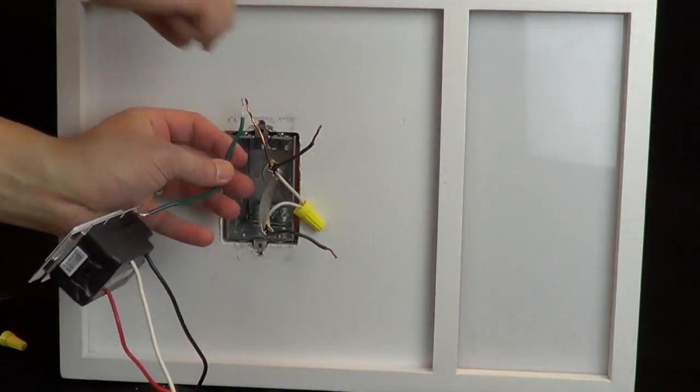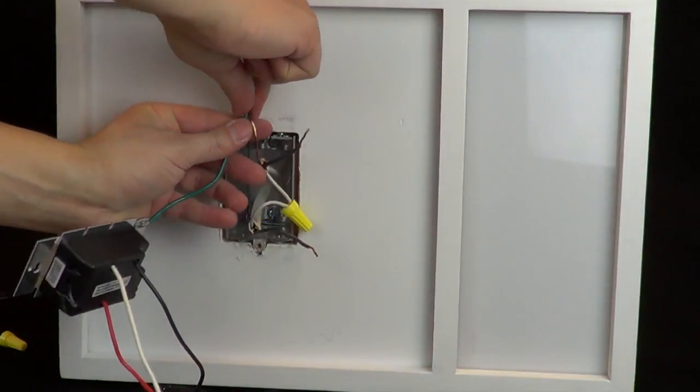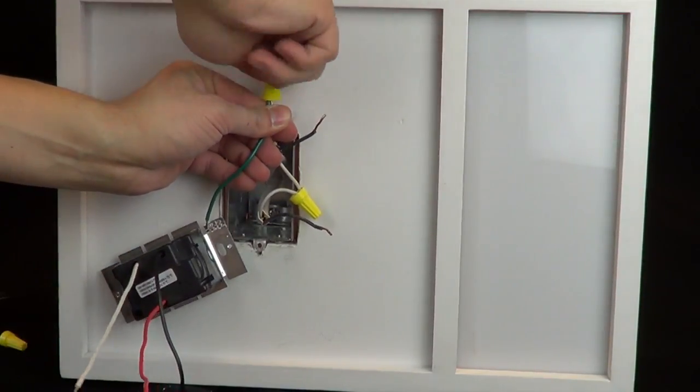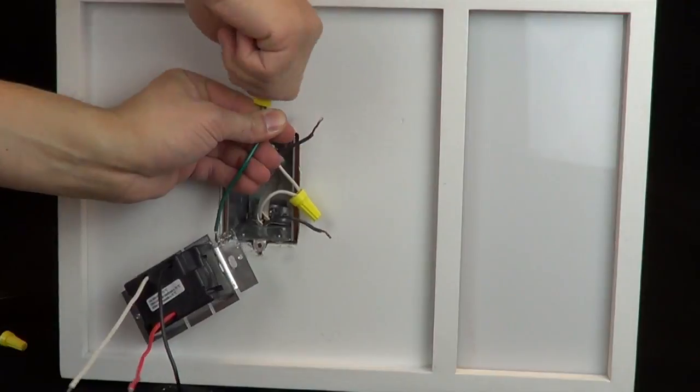First, use a wire cap to connect the ground wire to the green wire on your new control. If you do not have a ground wire in this wall box, simply place a cap on the green wire on the control.